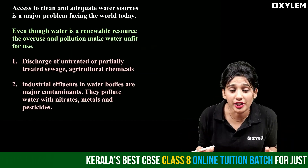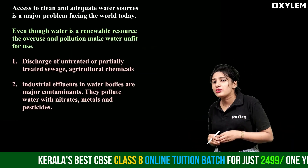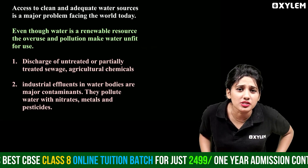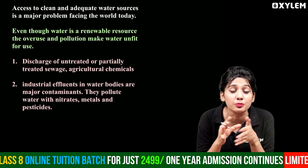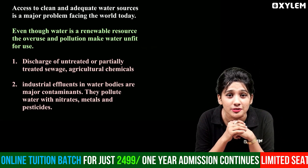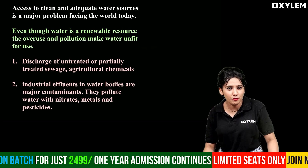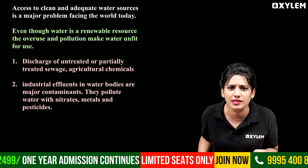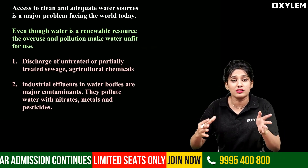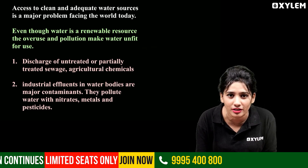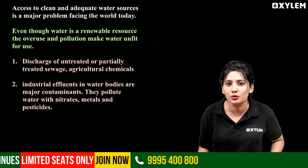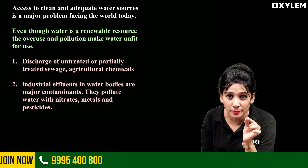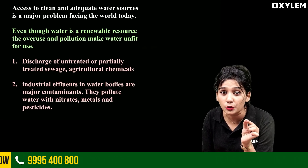We already know that water pollution is a major issue faced by our earth today. What are the reasons why water pollution is caused? Industrial effluents, agricultural chemicals, fertilizers, and pesticides — because of these, water pollution affects our 1% of available water for human needs.